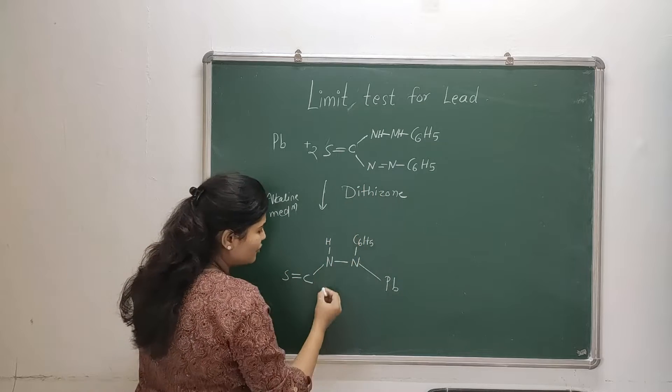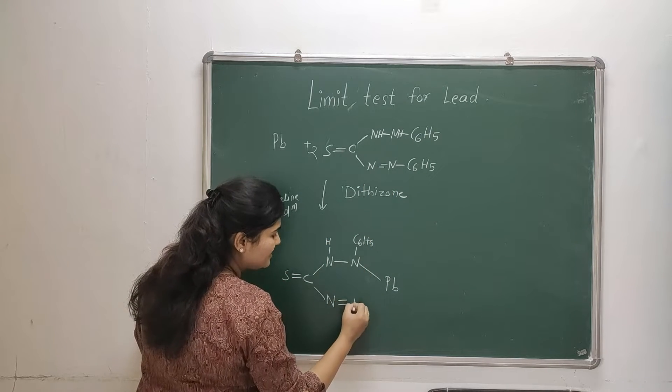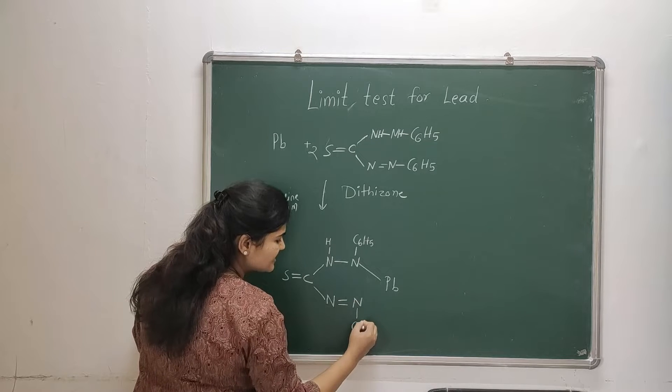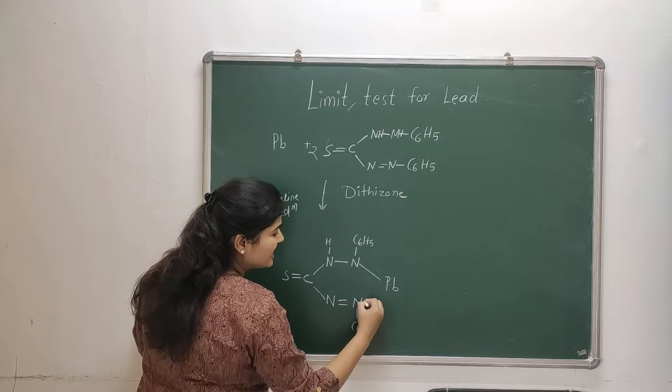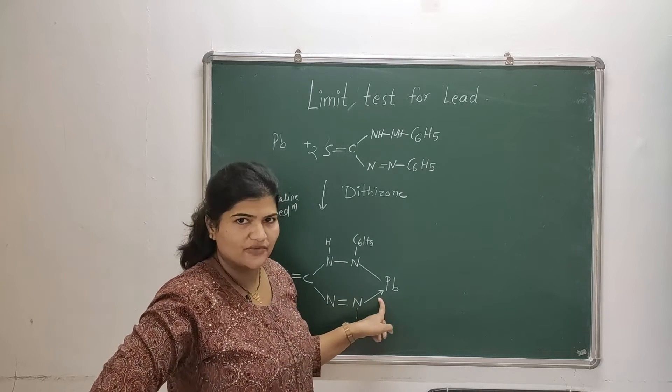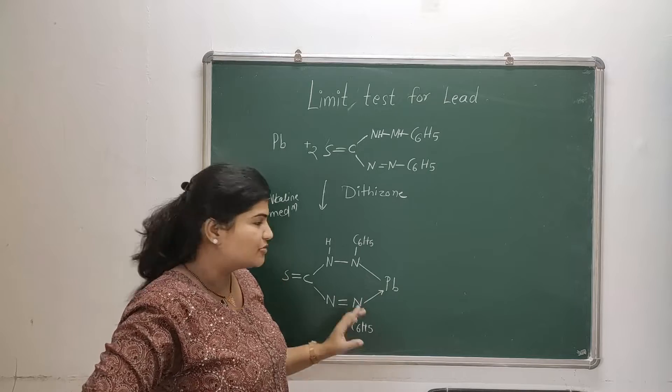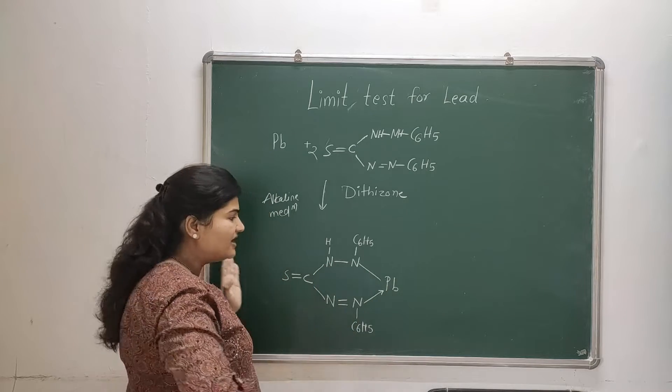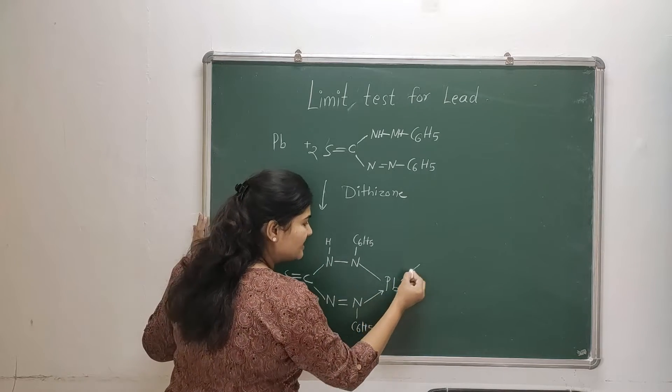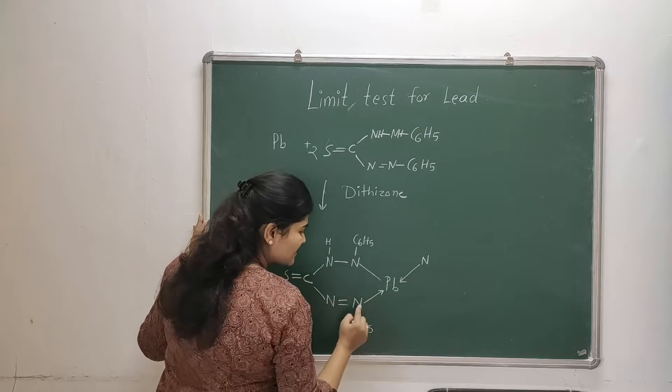Now here what we can do - this nitrogen double bond nitrogen and this C6H5 comes down here, and here the nitrogen is forming a coordinate bond. In complexes there are multiple covalent bonds and coordinate bonds. So this is the half part.